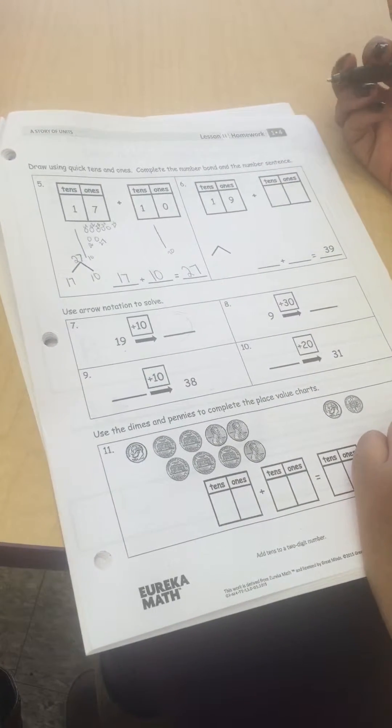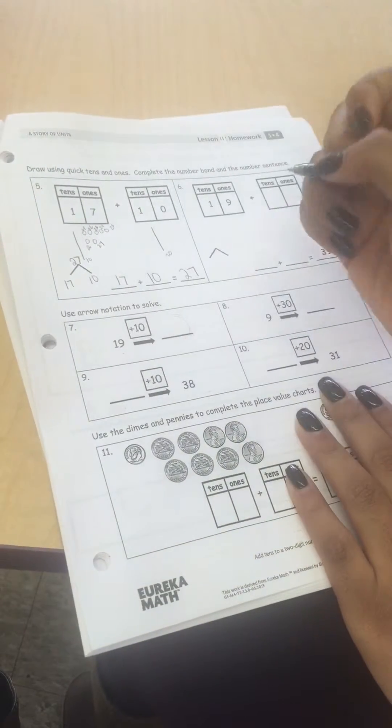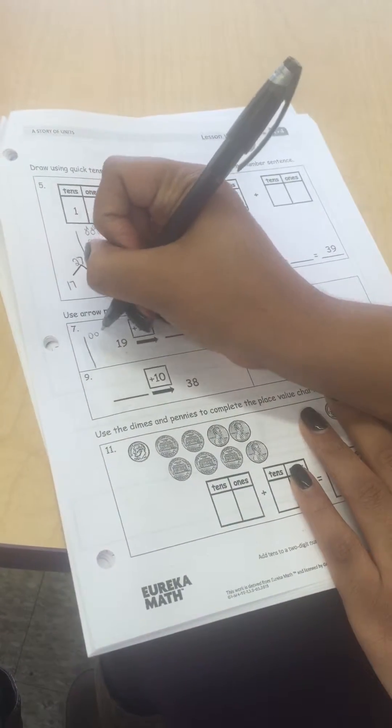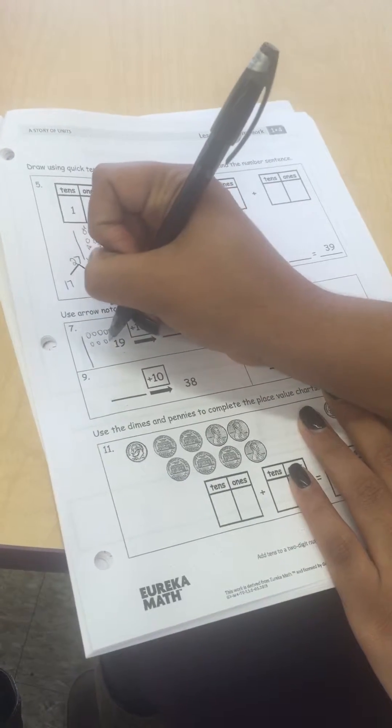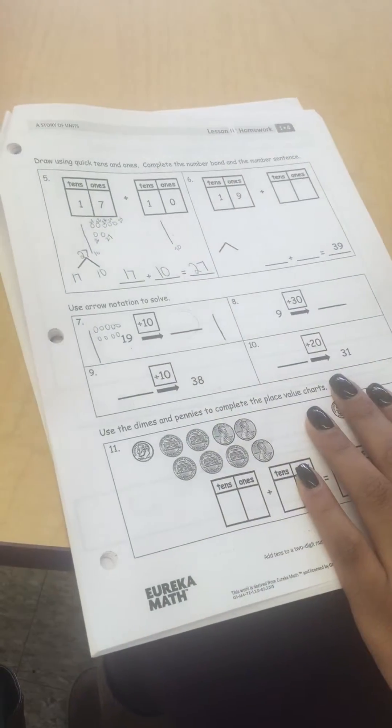The easiest way to do this is to draw quick tens and ones again. So I'm going to draw 19 using quick tens and ones: 10, 11, 12, 13, 14, 15, 16, 17, 18, 19. I'm only adding one ten, so I'm going to just draw a quick ten on the other side.